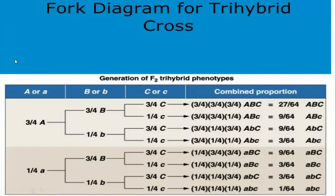We can also use the forked line method to calculate genotypic ratios. For that, we write the individual genotypic ratio for each gene pair — for example, one out of four offspring represent the homozygous AA condition, and we combine that with one out of four homozygous BB and one out of four homozygous CC. The same method is applied to write each genotypic ratio and calculate the combined genotypic ratios for the tri-hybrid cross. That concludes the tri-hybrid cross or three characters cross.